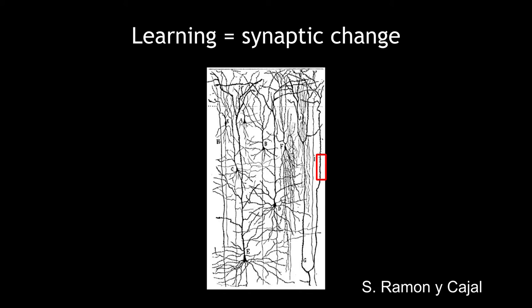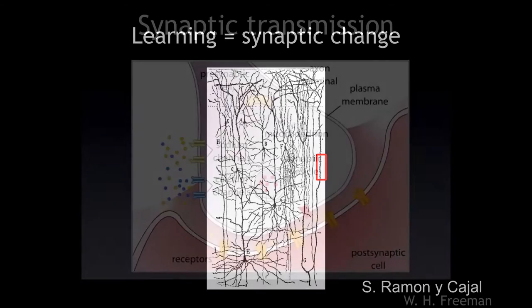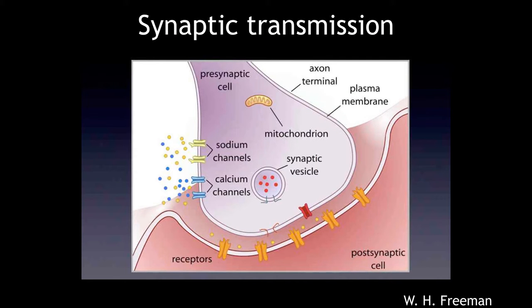The neurons have long processes called dendrites, which are the receiving parts of the neuron. If you focus in on the area depicted by the red square, you see little protrusions called spines. These spines are the sites of synaptic communication — where the sending part of a neuron, the axon, ends and the receiving part begins. When an electrical impulse comes down the axon, it causes the release of a neurotransmitter that crosses the synaptic cleft and binds to receptors on the postsynaptic, or receiving, part of the neuron.